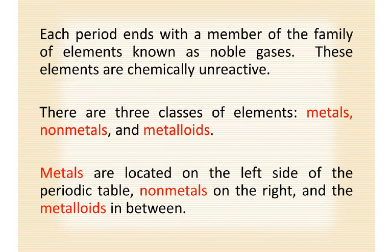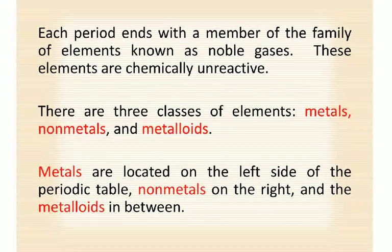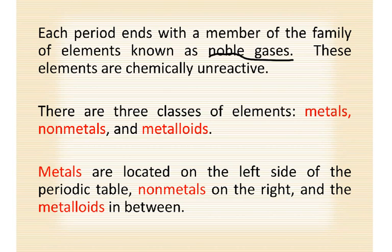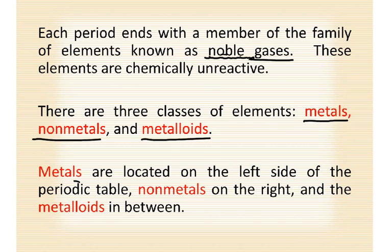Each period ends with a member of the family known as noble gases. These elements are chemically unreactive, so every period always ends with a noble gas. Now there are three classes of elements — metals, nonmetals, and metalloids. Metals are located on the left side of the periodic table, nonmetals on the right, and the metalloids in between. You can't say metalloids are in the middle because they are not — metalloids are also on the right-hand side, but they mark the difference between metals and nonmetals. They're the ones that are halfway between, with properties of both metals and nonmetals.